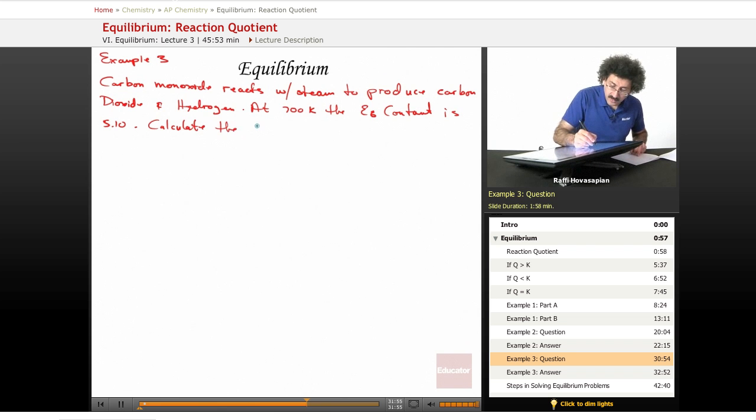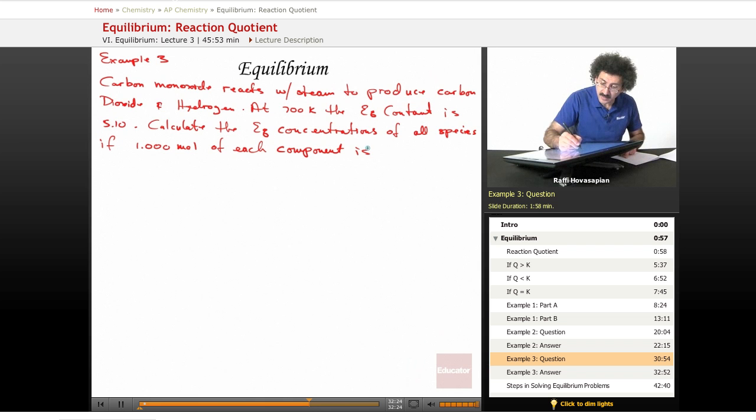Calculate the equilibrium concentrations of all species if 1.000 mole of each component is mixed in a 1.0 liter flask.